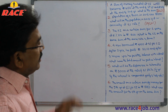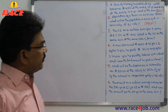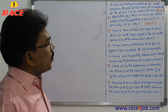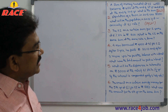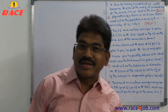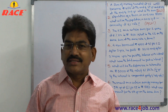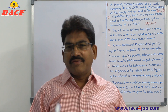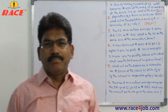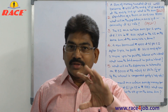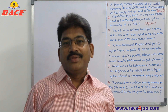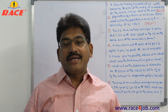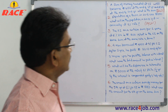Next question. The simple interest on a certain sum for 2 years at 6% per annum is 800. What is the compound interest on the same sum at the same rate and time? If the simple interest for 2 years is 800, what is the compound interest? The time and rate of interest are the same. Very simple — if we clearly understand what is simple interest and what is compound interest, we can do this without pen.